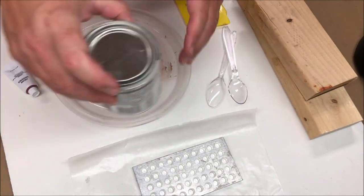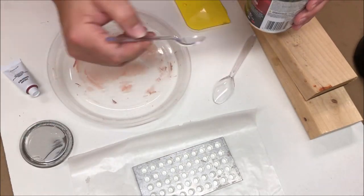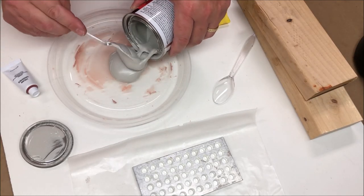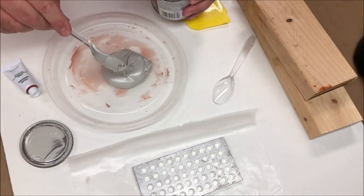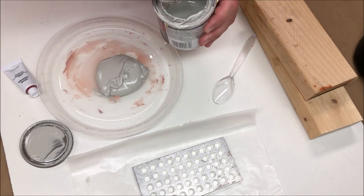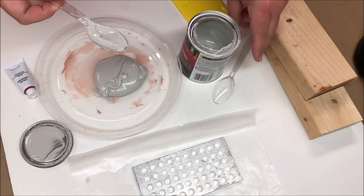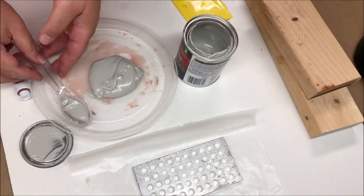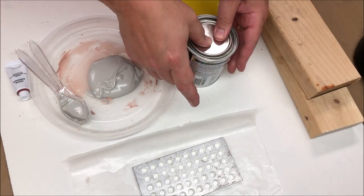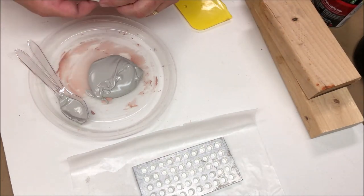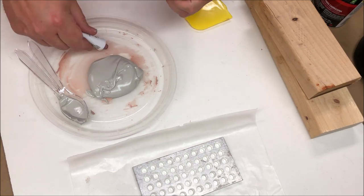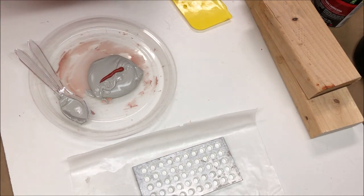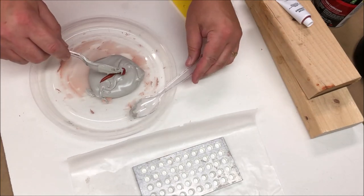Let's get started mixing some Bondo. You're definitely going to want to use disposable equipment for this. You're going to want a good sized dollop of the material. That's probably a little bit too much that I have there on the plate. And you're going to want some hardener - it doesn't take much hardener.